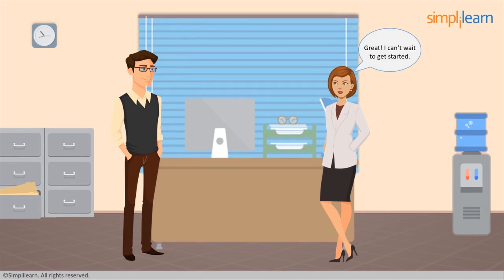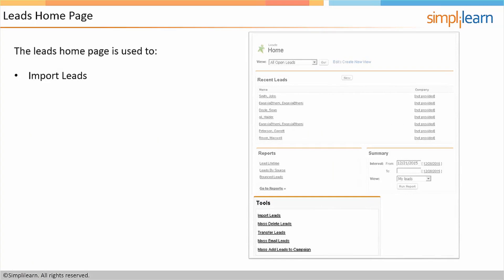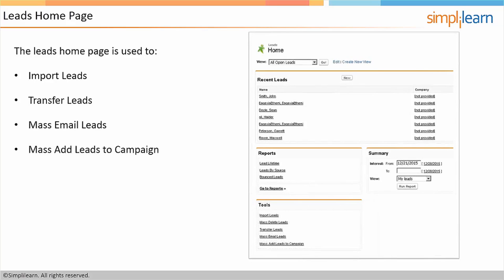Great, I can't wait to get started. To get started, the first thing we're going to talk about is the leads homepage. The leads homepage is used to view lists of data, import leads, transfer leads, use the mass email leads tool, as well as mass add leads to campaign. Over here on the right-hand side, this is a screenshot of the leads homepage. And now we're going to jump into Salesforce and actually see the real thing.